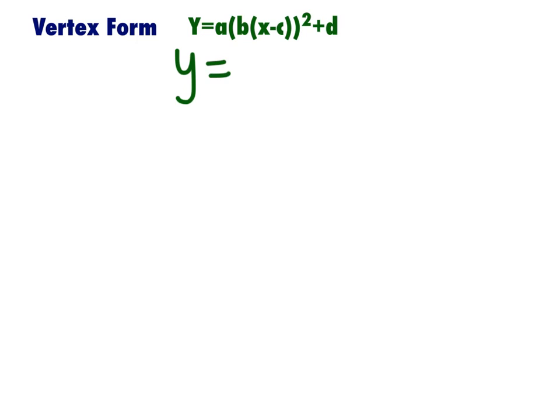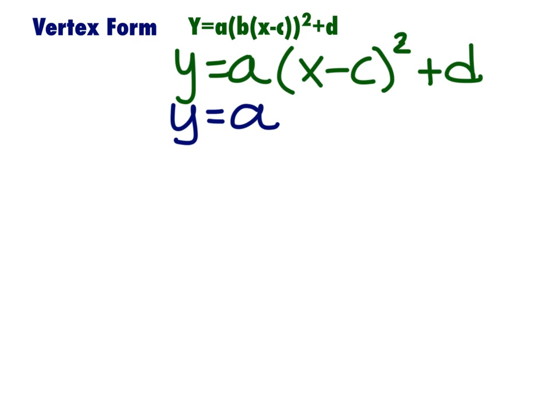And we're going to say y equals a. We're not going to worry about b for the quadratics. We're just not. We're going to leave it out. So we're going to say x minus c squared plus d. And then, as we've talked about before, some books, and I think ours even does it, they don't use c and d. They use h and k. But it doesn't matter. They're the same thing.